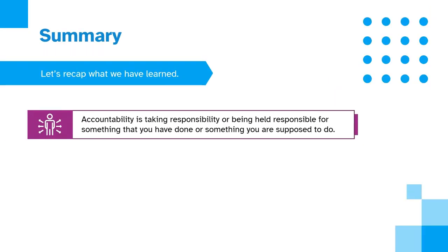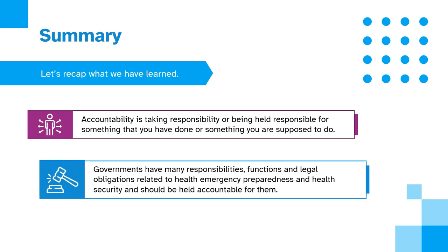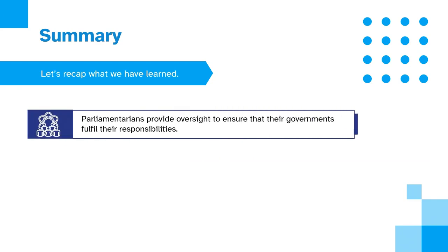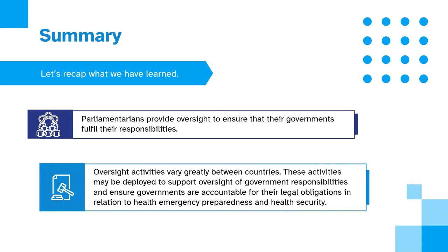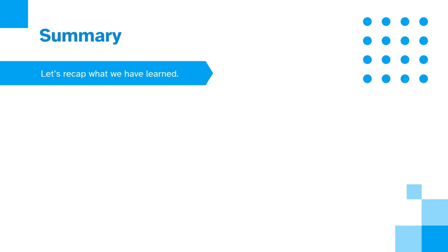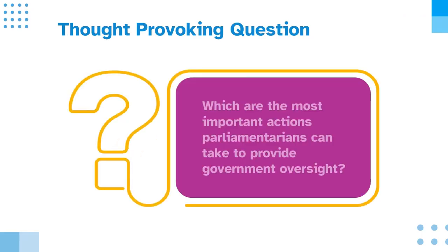Let's recap what we have learnt. Accountability is taking responsibility or being held responsible for something that you have done or something that you are supposed to do. Governments have many responsibilities, functions, and legal obligations related to health emergency preparedness and health security and should be held accountable for them. Parliaments provide oversight to ensure that their governments fulfil their responsibilities, and oversight actions vary greatly between countries. These activities may be deployed to support oversight of government responsibilities and ensure governments are accountable for their legal obligations in relation to health emergency preparedness and health security. A key question to ponder: Which are the most important actions parliamentarians can take to provide government oversight?